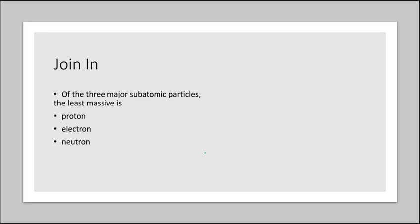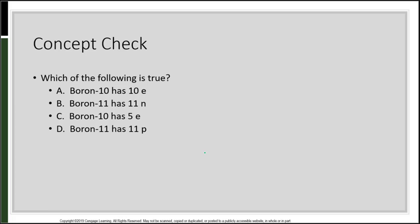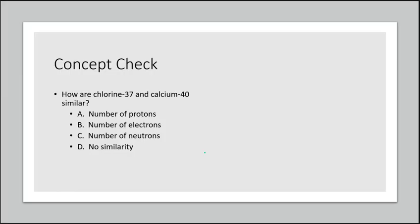Of the three major subatomic particles, the least massive is the electron. Which of the following is true? Boron-10 has 10 electrons? Boron-11 has 11 neutrons? Boron-10 has 5 electrons? Or boron-11 has 11 protons? The answer is boron-10 has 5 electrons. How are chlorine-37 and calcium-40 similar? They have the same number of neutrons. That wraps up chapter 2, section 1.